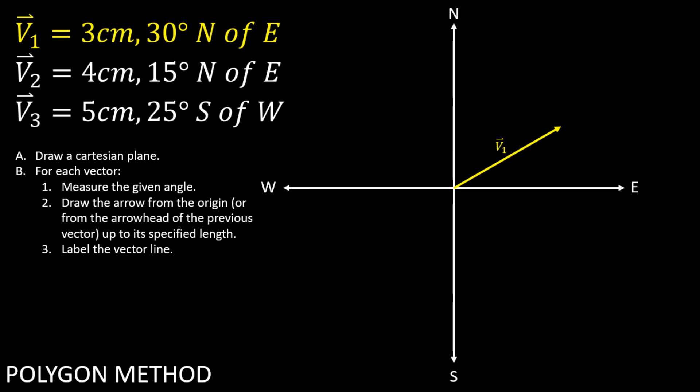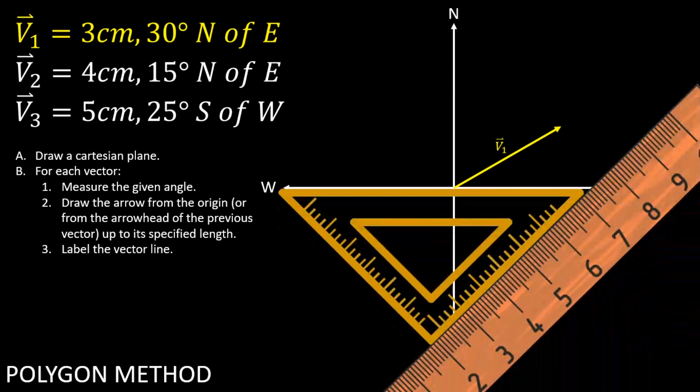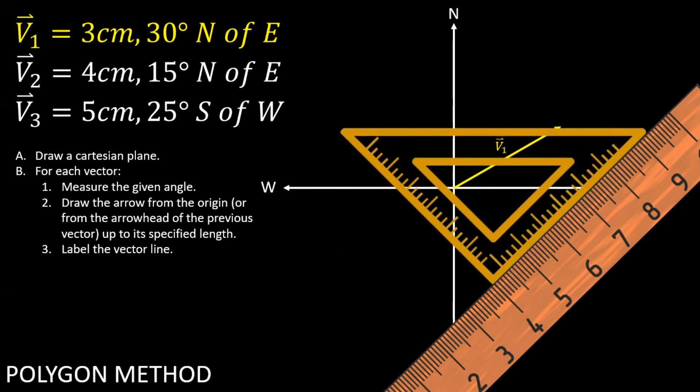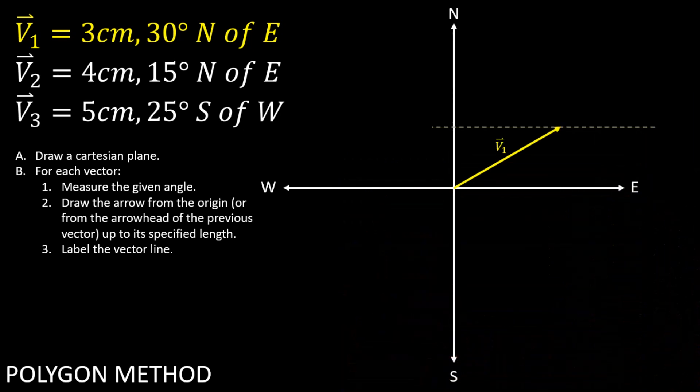To proceed, it is recommended to draw a line parallel to either axis for an accurate reference of your measurements. You may use a triangle and a ruler in drawing parallel lines. Do this by aligning one side of a triangle with one of the axes and placing your ruler or another triangle as such. Slide the triangle along the ruler until it reaches the arrowhead of your last drawn vector line, then draw a dashed construction line like this.